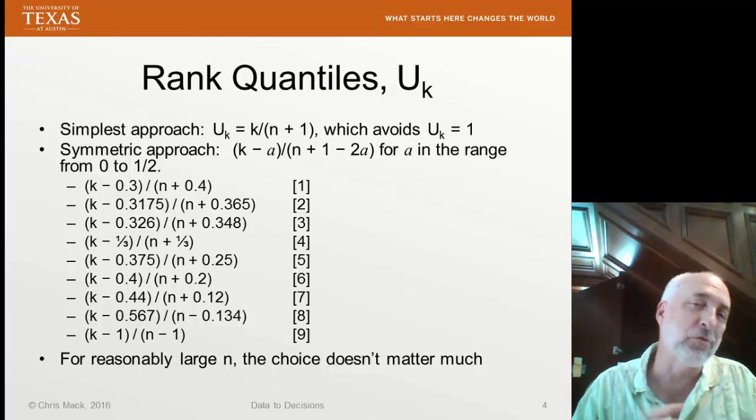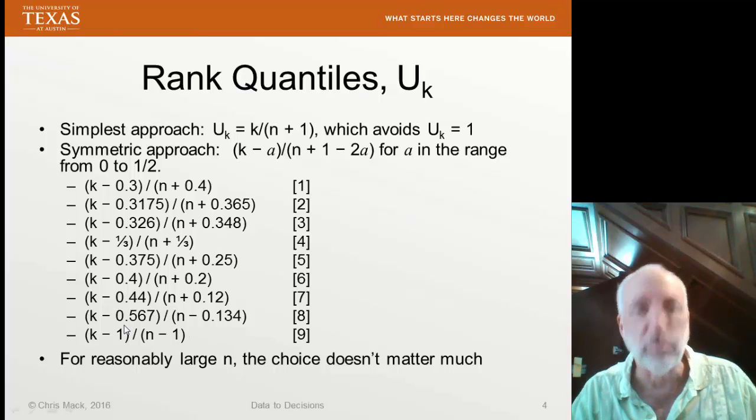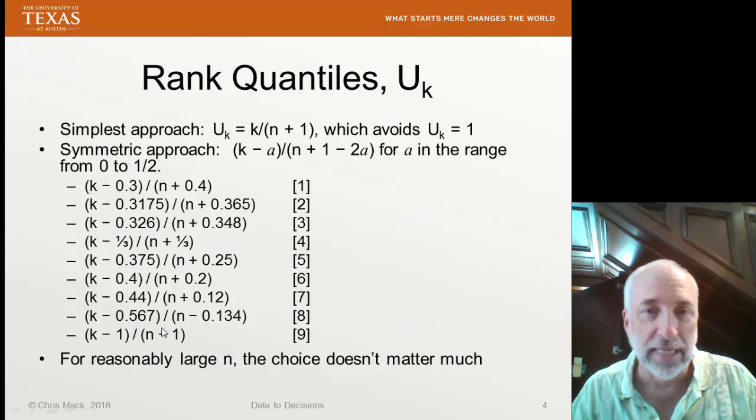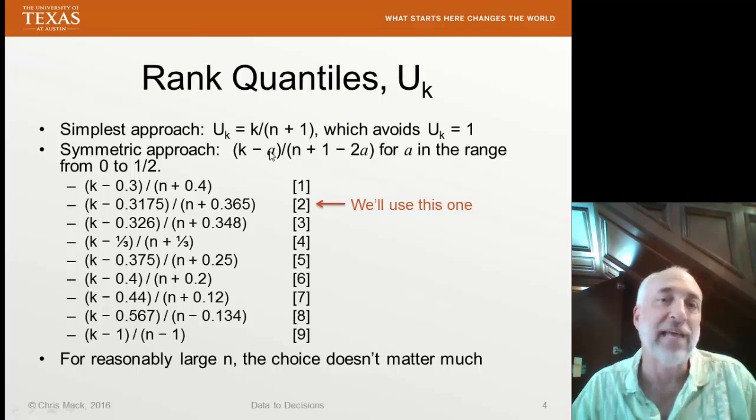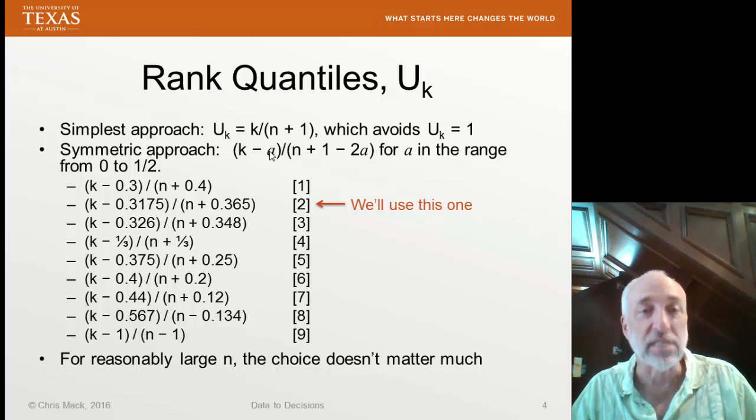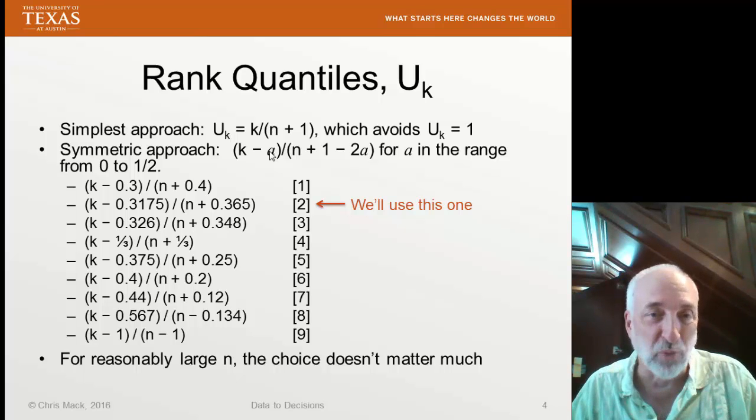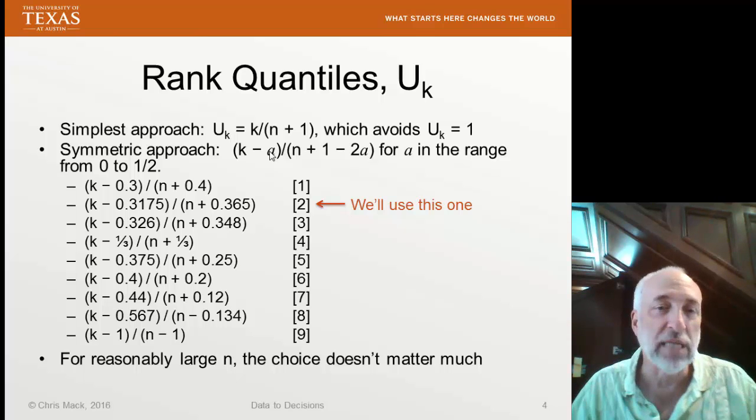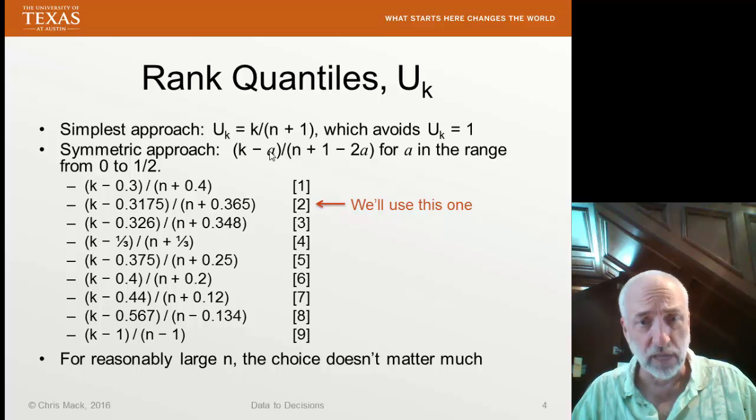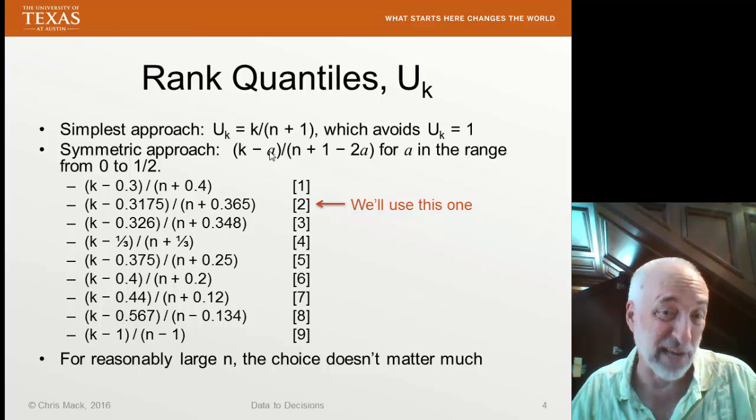And there's reasons for wanting to do it one way or another, but here are a set of published values that are used. We're going to use this one. This is, I think, the most commonly used in the statistics world. The exact reasons why we use this 0.3175 and 0.365 are not really that important for us. But, as long as n is kind of large, the choice doesn't really matter that much.